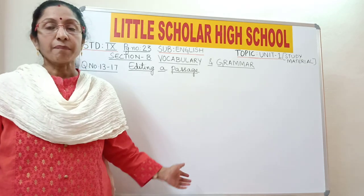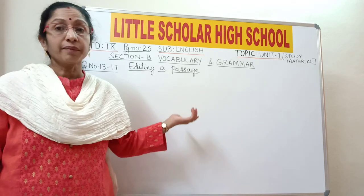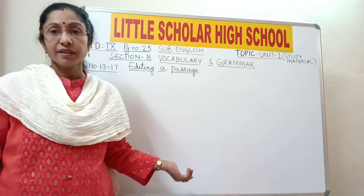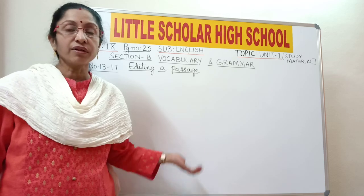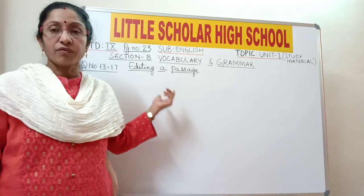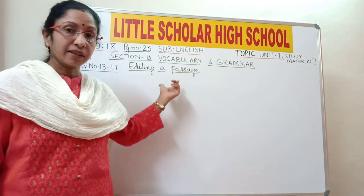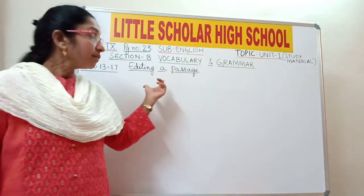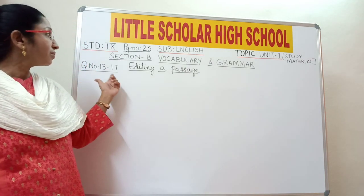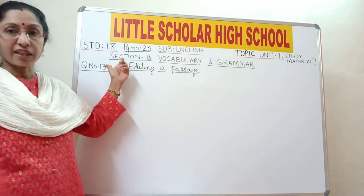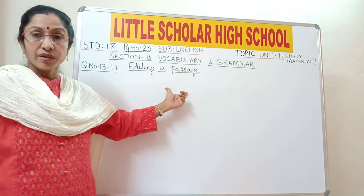So in the lesson, in part 1, we have done the passages from the textbook and now we are going to do vocabulary and the grammar part. We will start question numbers 13 to 17, that is Section B, where you have to edit a passage.